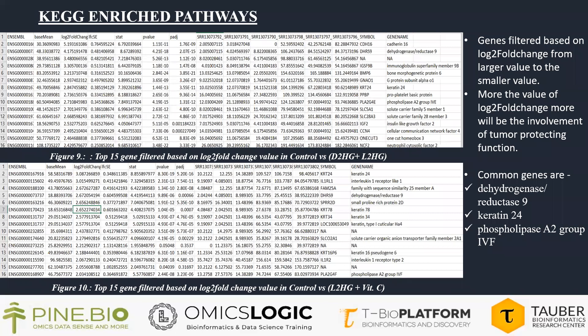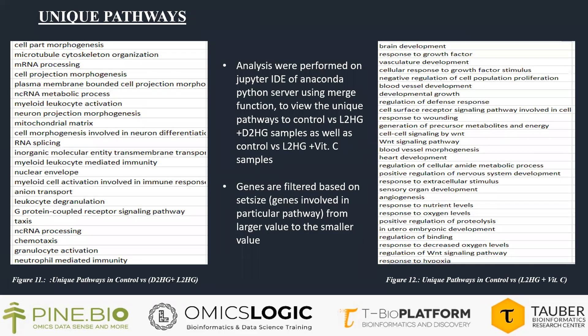The KEGG pathways were further analyzed based on genes and filtered by log2 fold-change value from largest to smallest. The greater the log2 fold-change value, the greater the involvement of tumor-protecting function. Common genes found in both conditions are dehydrogenase/reductase-9, keratin-24, and phospholipase A2 group IVF or IVE. Unique pathways analysis was performed on Jupyter IDE of Anaconda Python server using a merge function to view unique pathways between samples. Genes were filtered based on set size, representing genes involved in a particular pathway.